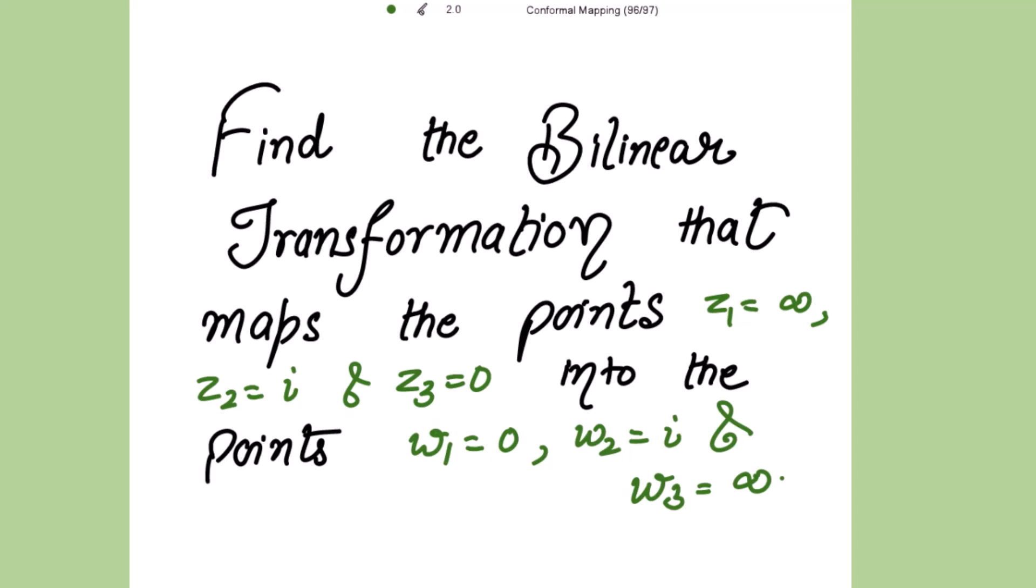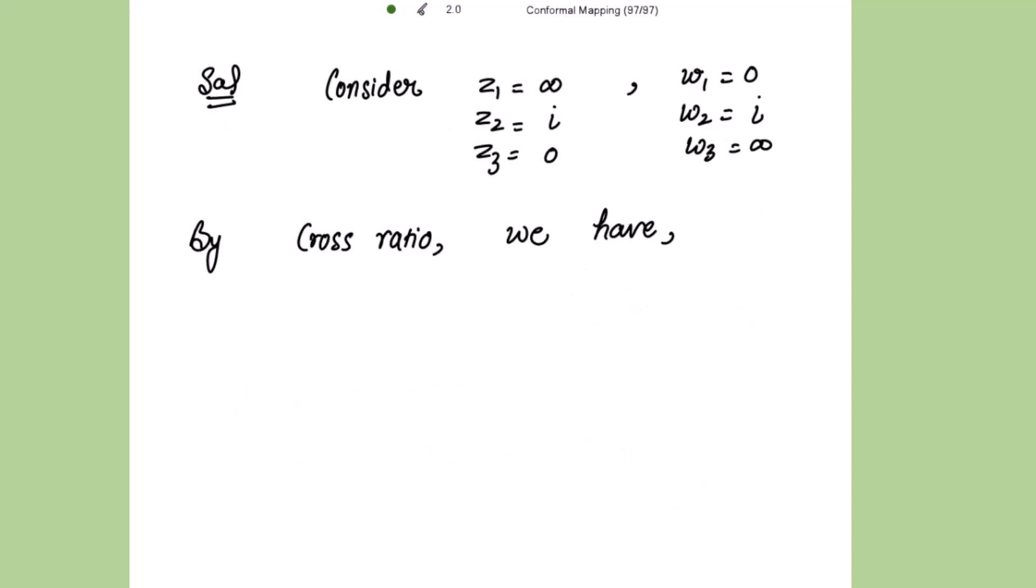Now we are having the points as infinity, right? So let's start. These points are given to us: z1, z2, z3 and w1, w2, w3. By cross ratio we have the formula to get the required bilinear transformation.